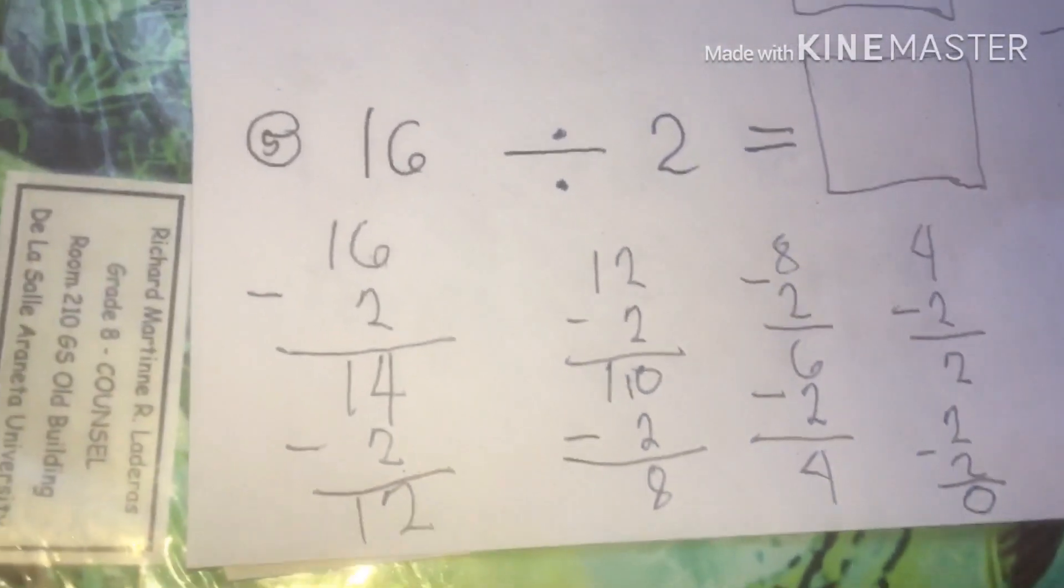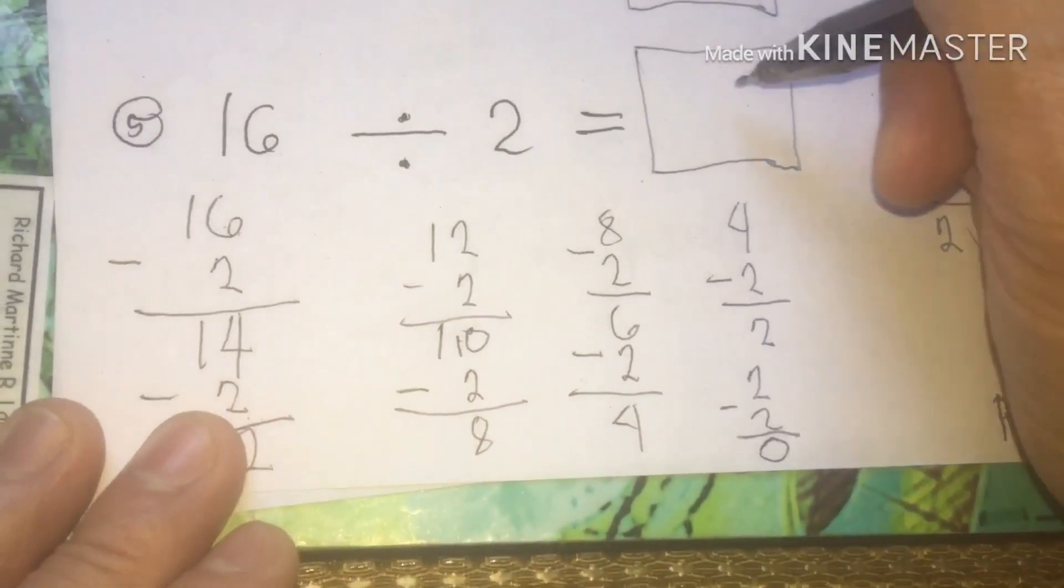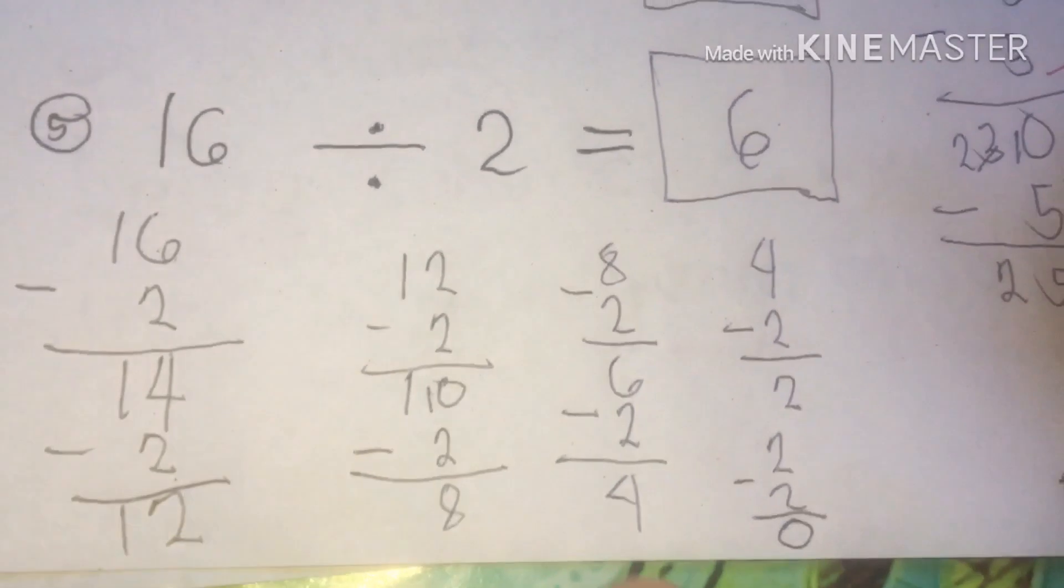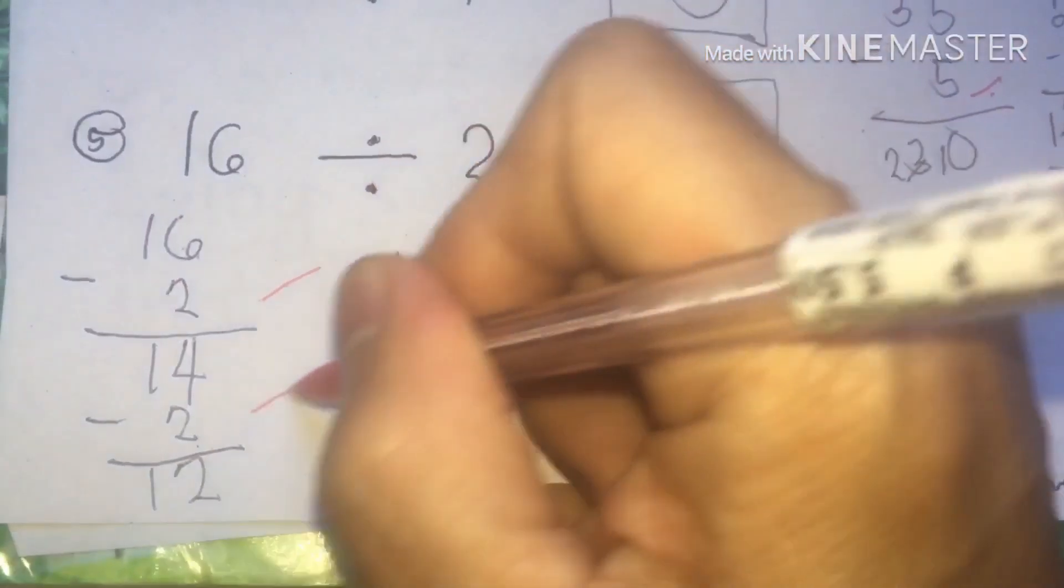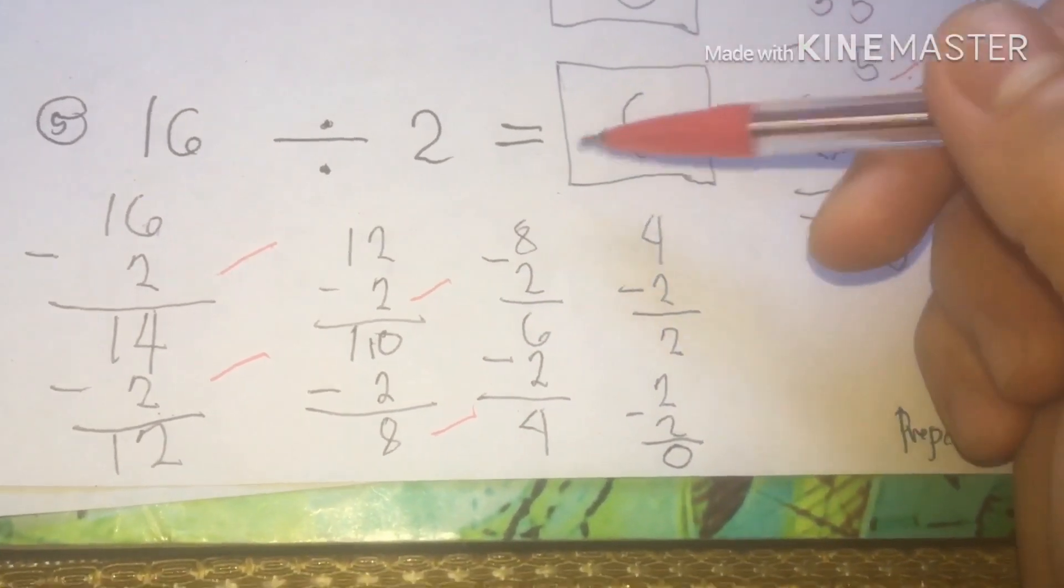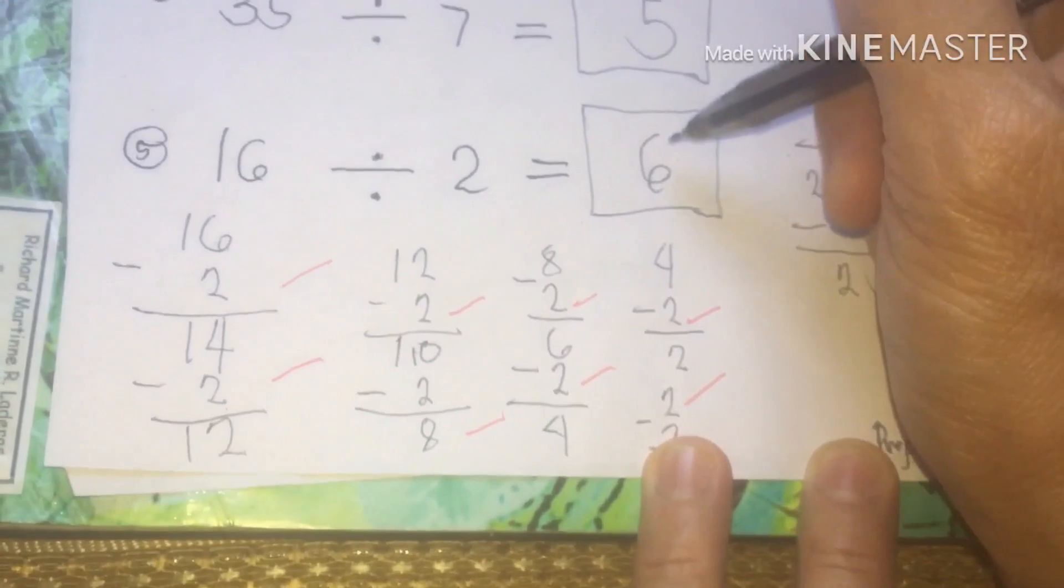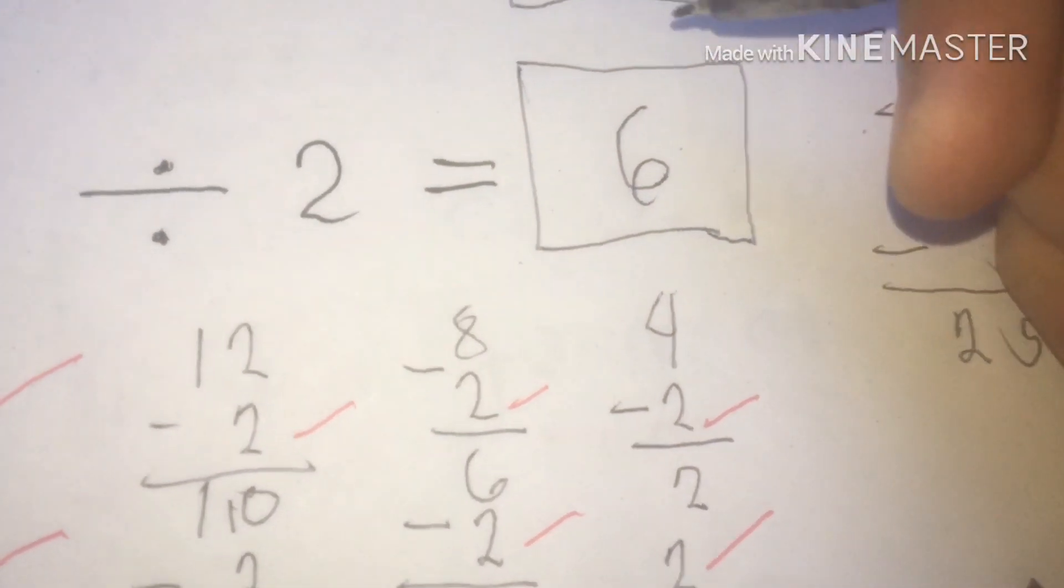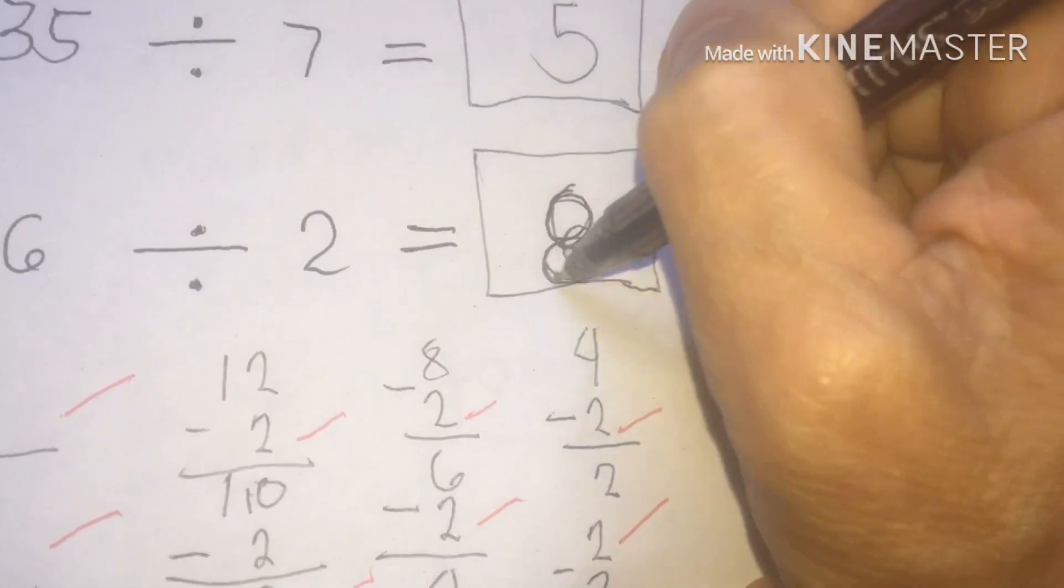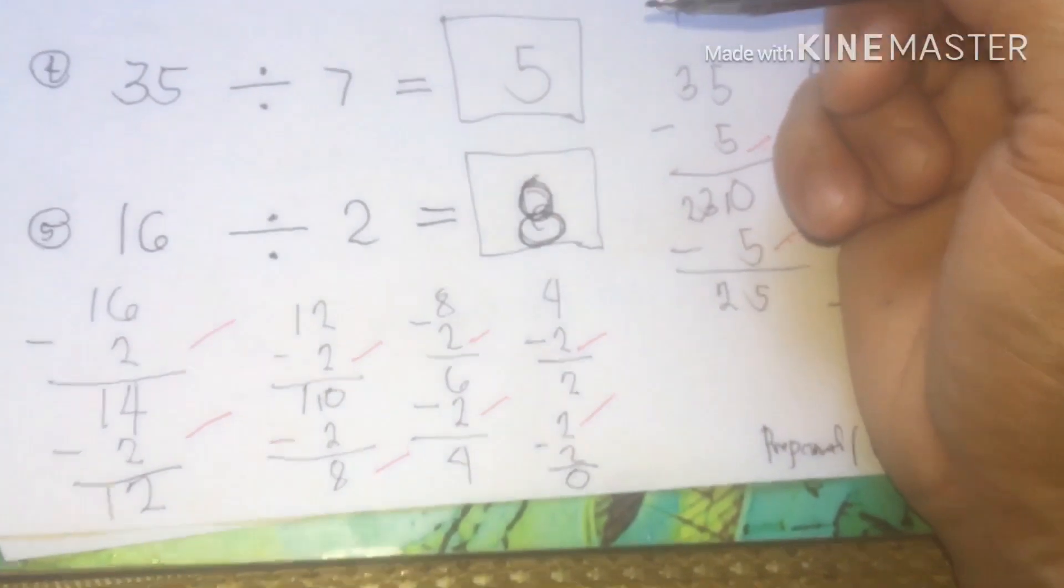That's it for number 5. Therefore 16 divided by 2 is what we call 8. That's what we call our techniques in division process using repeated subtraction.